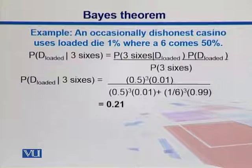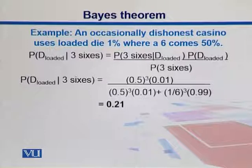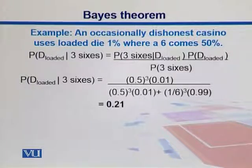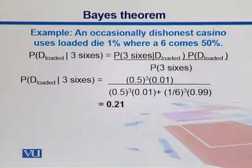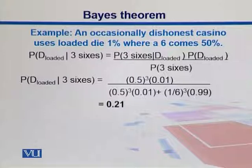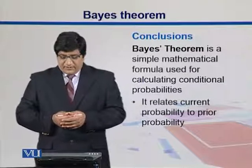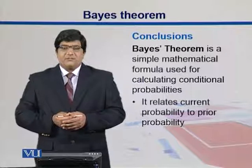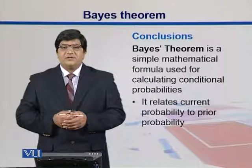So what do we conclude? Seeing just three sixes, should we conclude the die is loaded? The probability is around 20%, so we cannot say for sure it is loaded since the probability is low. Using this theorem, we can calculate the probability of our hypothesis. We hypothesize the die is loaded, solve the equation, get the value, and either confirm or reject the hypothesis. In this case the probability is low. Bayes theorem is a simple mathematical formula for calculating conditional probabilities — it relates current probabilities to the prior probabilities.